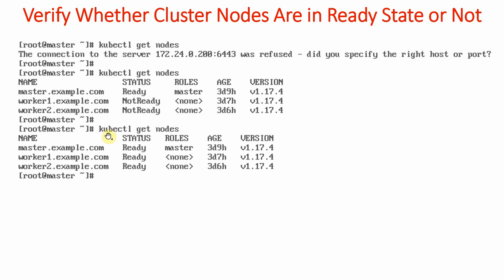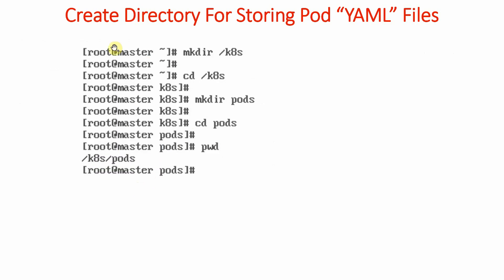Once kubectl get nodes shows all three systems are ready, we can proceed. Whenever creating anything, we create a dedicated directory for storing YAML files. There are two ways to create pods: using a YAML file (Yet Another Markup Language) or using the command line. We will use both options. We created a directory k8s and inside it a subdirectory pods, and we will go into that directory.